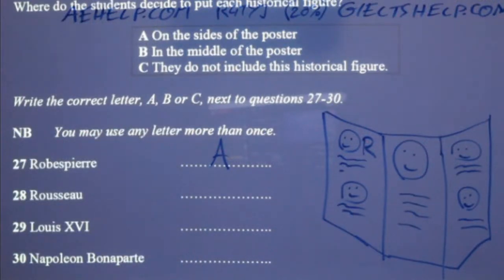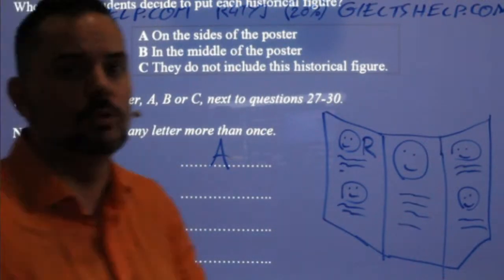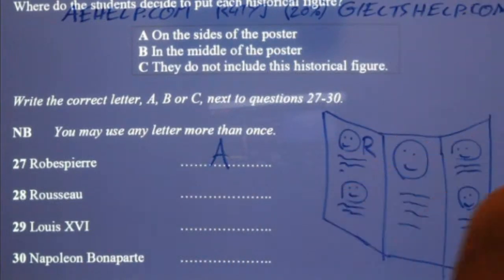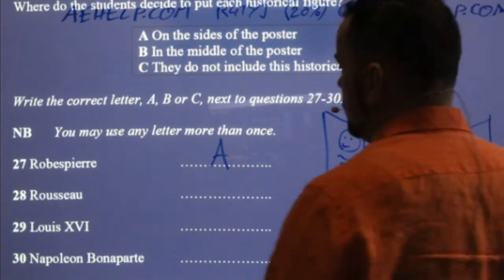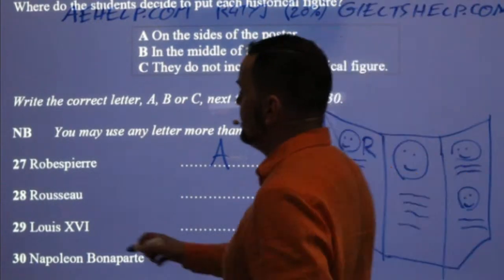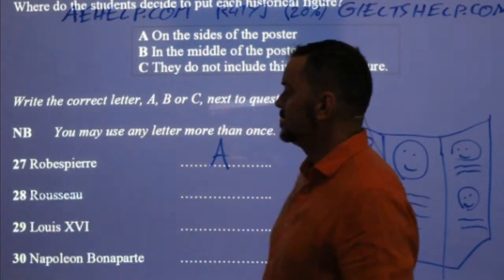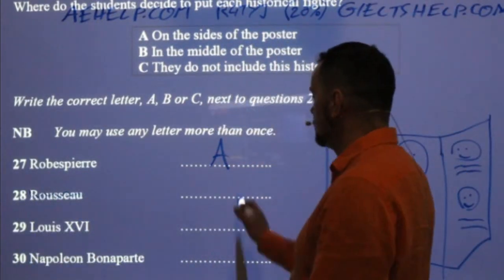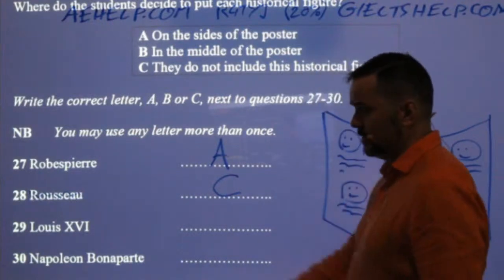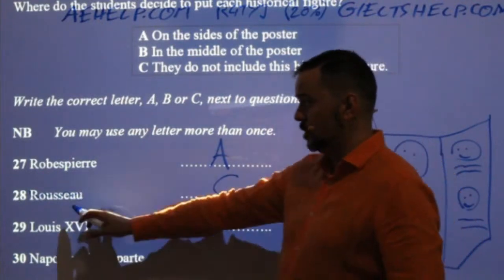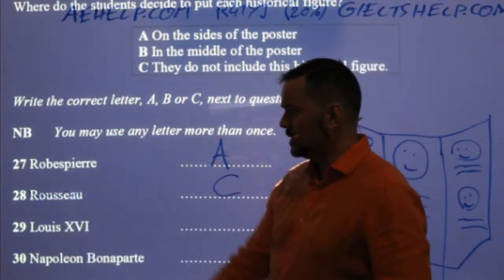Number 28: Rousseau — on the poster on the side, in the middle, or not on the poster? This is 28 Rousseau. Honey says Rousseau is not on there — and we don't hear Rousseau in the audio. They don't even mention the name of this person. So definitely Rousseau is not mentioned — quite different from Robespierre.